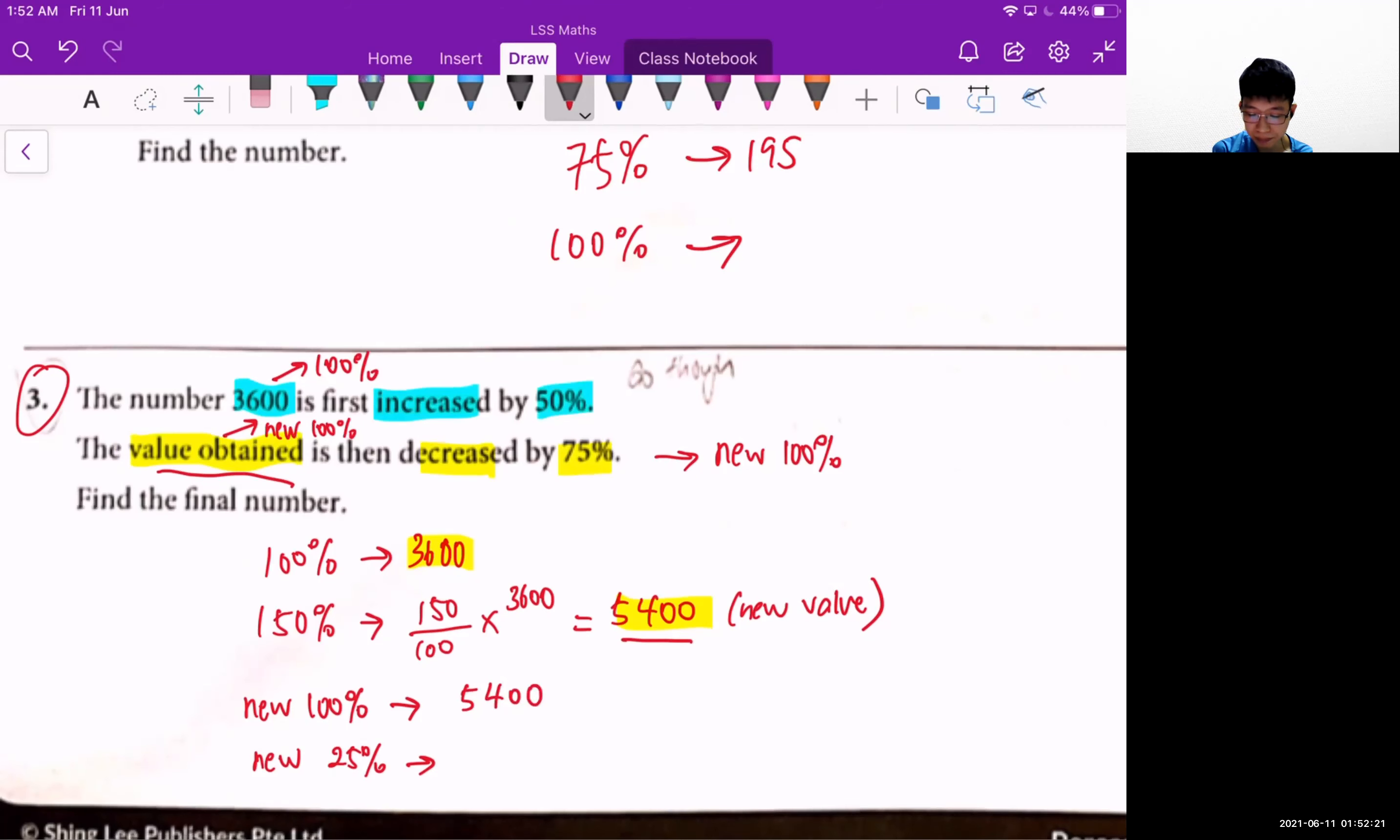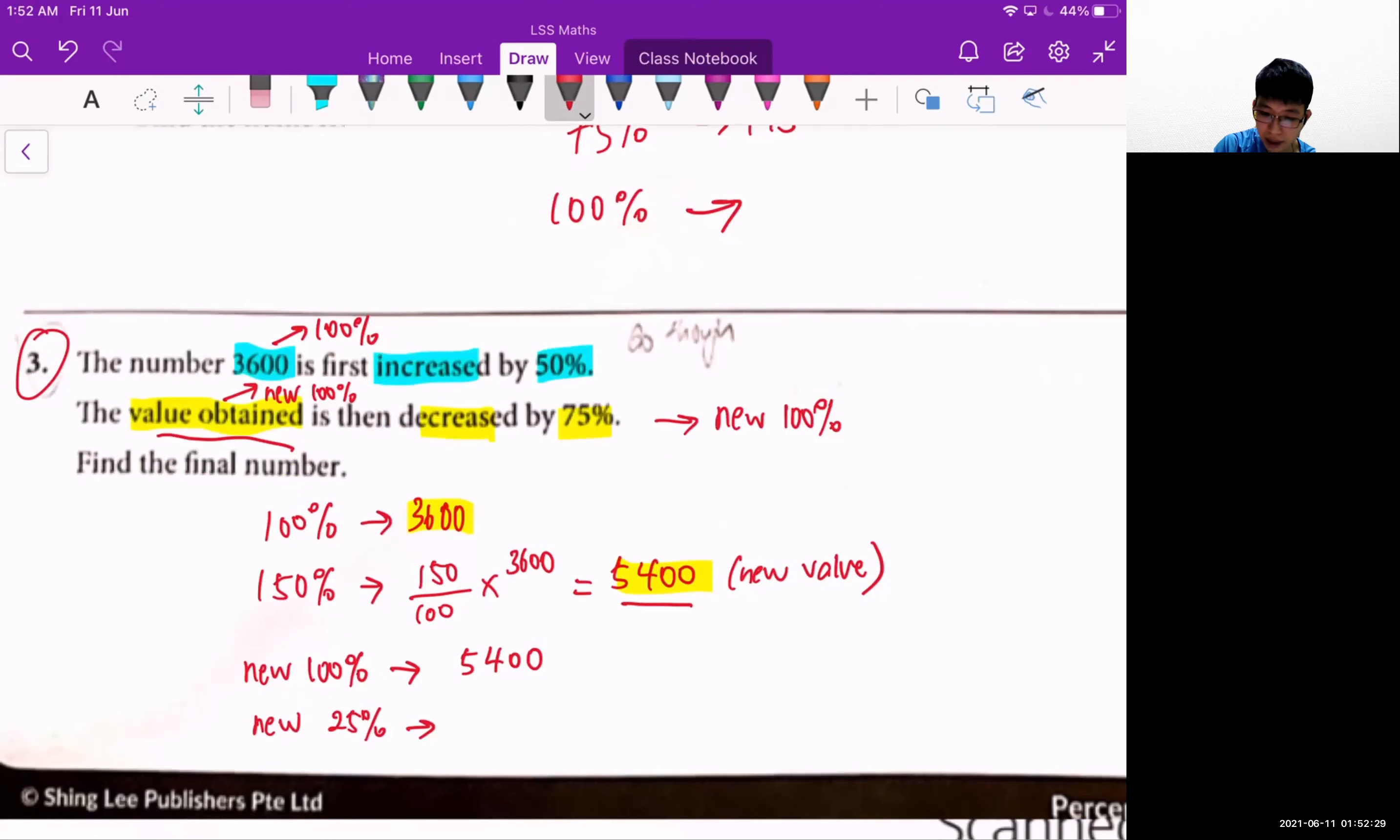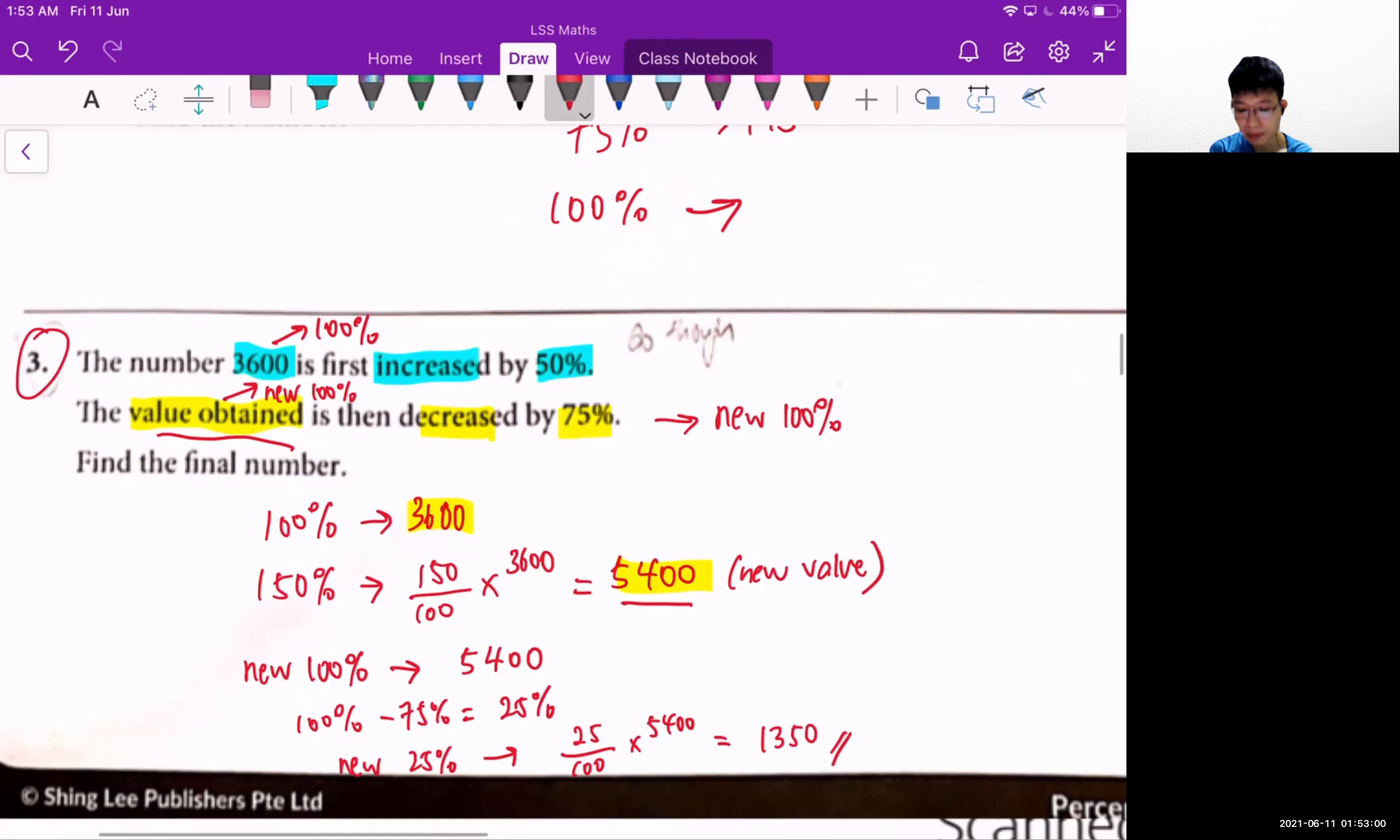And to find out what is the final number, I need to first identify what is the final percentage. So 100% minus 75% will be 25%. So my new 25% will be 25 over 100 times 5400. So my final value will be 4050. This will be my final answer.